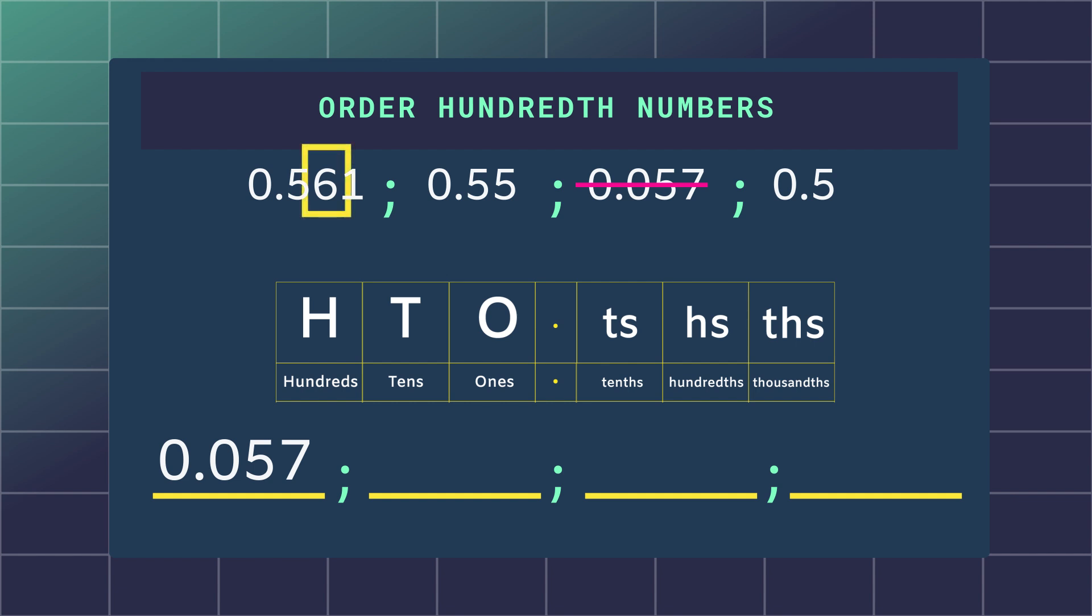This number has 6 hundredths. This number has 5 hundredths and although this number isn't as obvious, we actually have a zero in the hundredths place. We call this a placeholder.